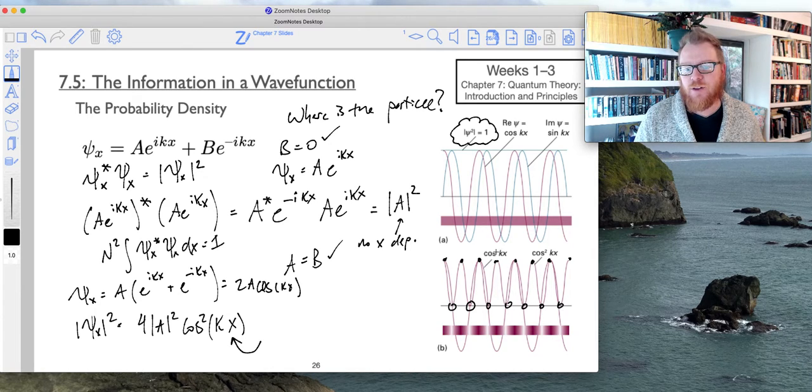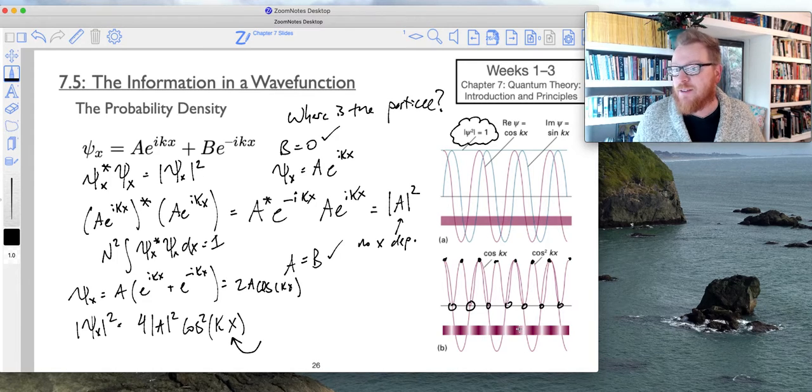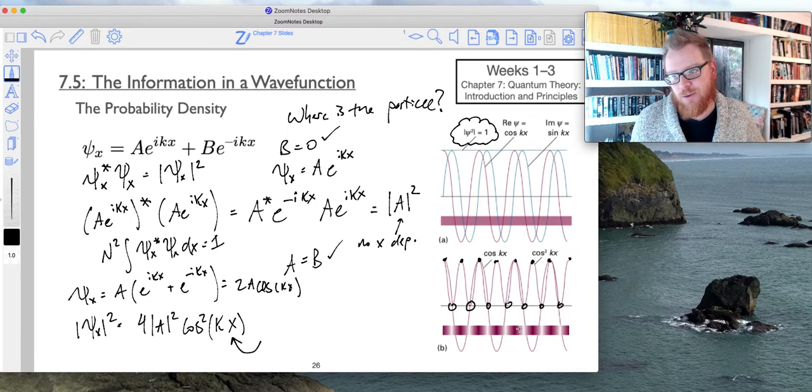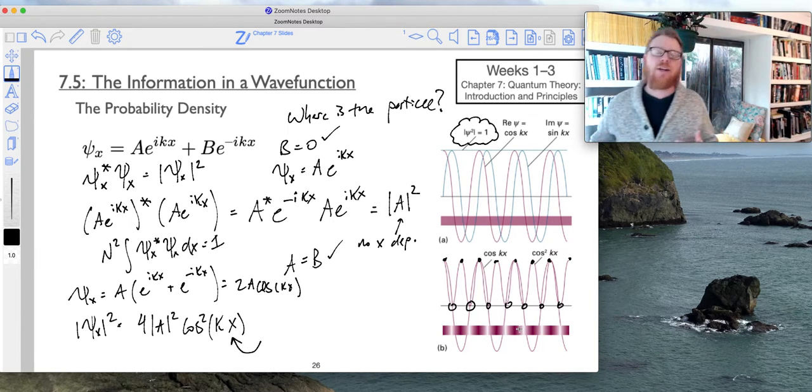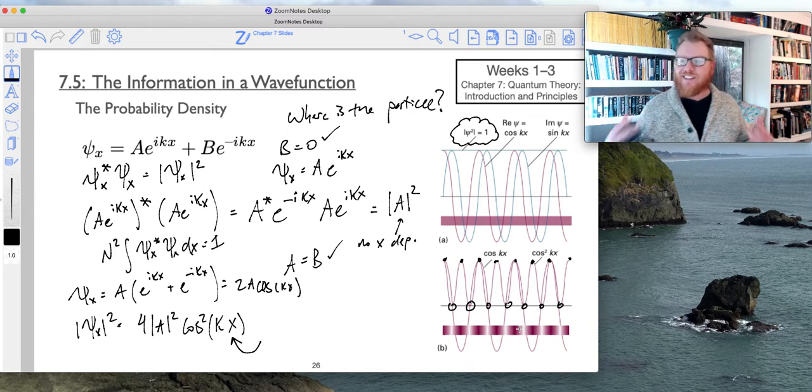And so the cosine squared graph looks very similar to the cosine graph except for it's a little bit narrower and obviously because it's squared it doesn't have negative values.